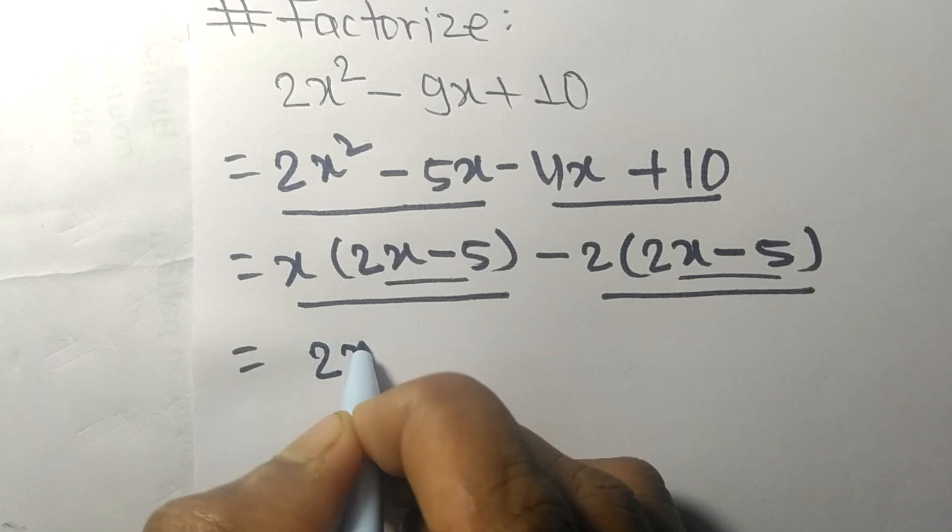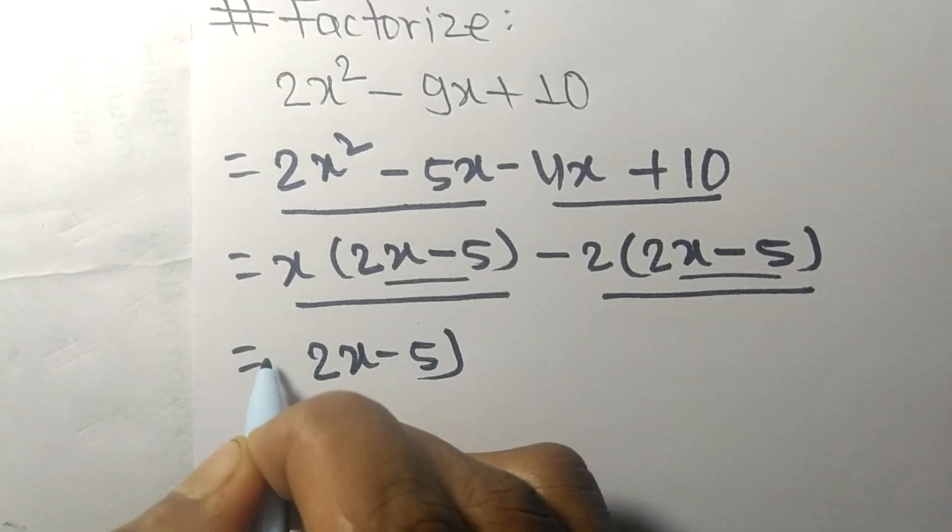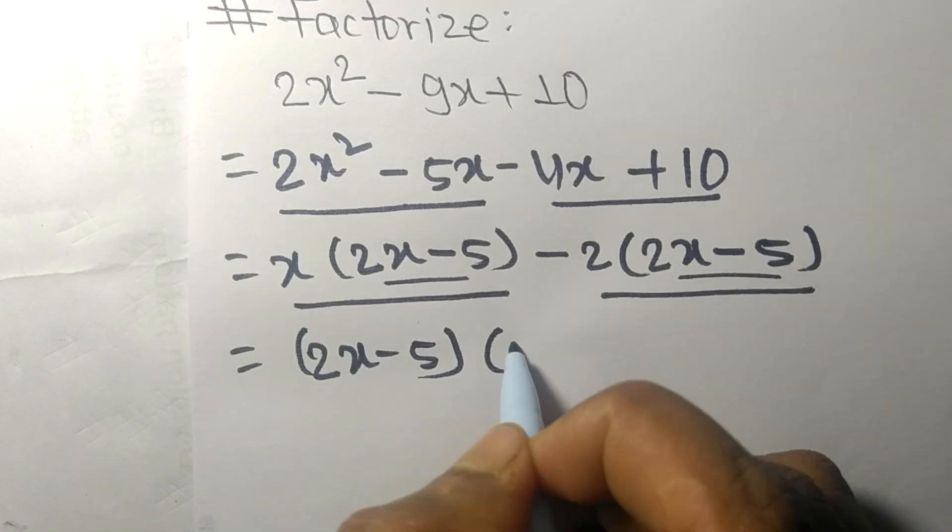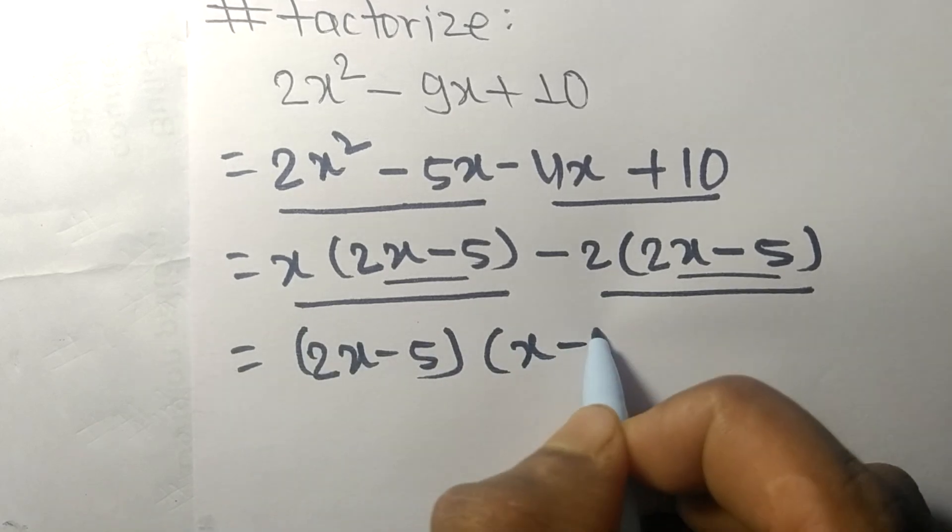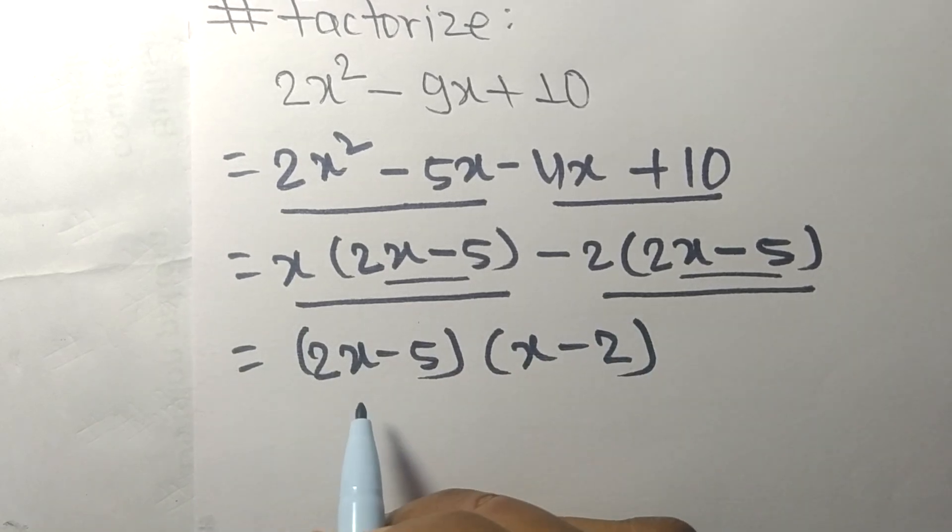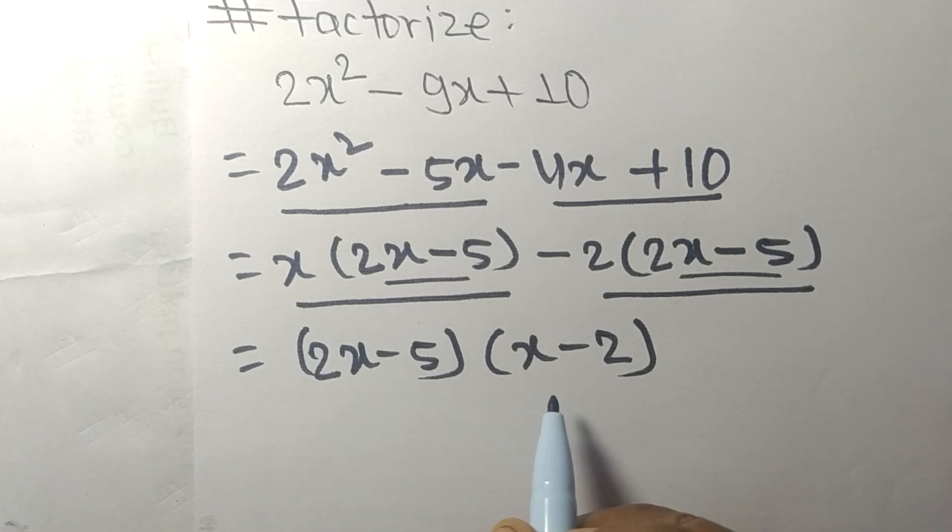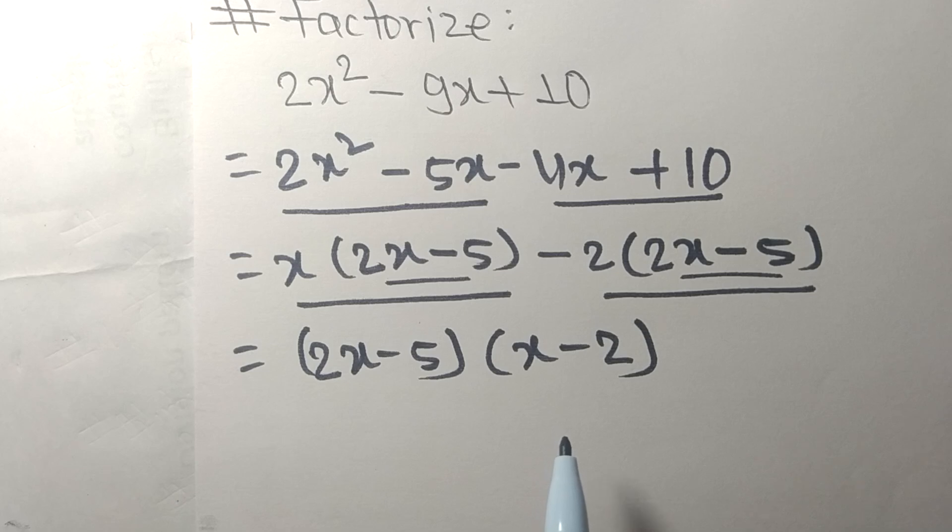With 2x - 5 as the common factor, the remaining terms are x from the first expression and -2 from the last expression. So (2x - 5)(x - 2) are the required factors. Thanks for watching.